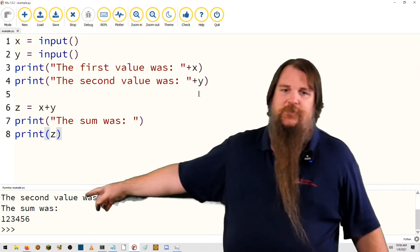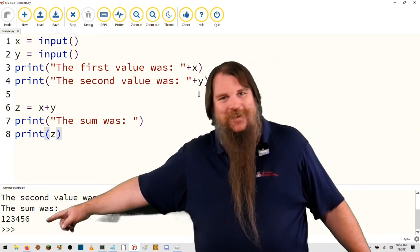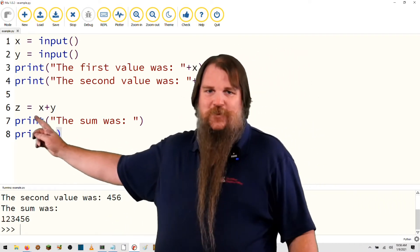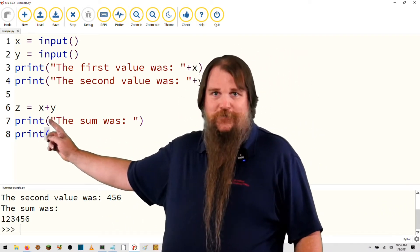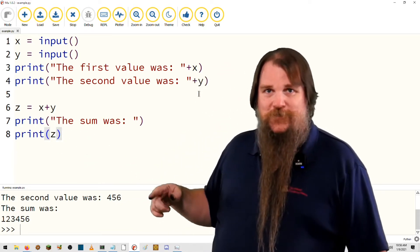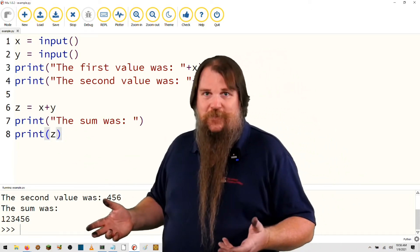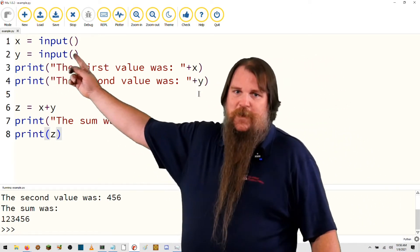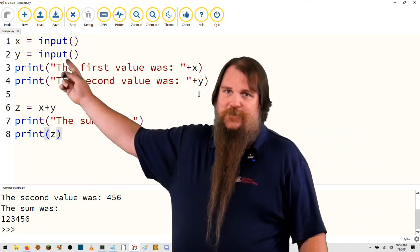And the sum was... hey, that's not right. What did it do? Well, x and y were both string variables. You do a plus on two string variables, what it does is concatenate them together. They're not integers. So somehow we need to convert these inputs into integers.